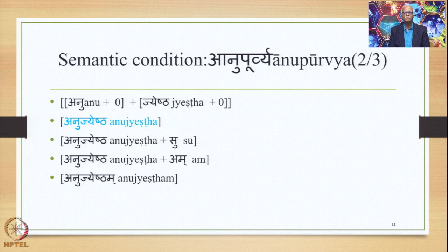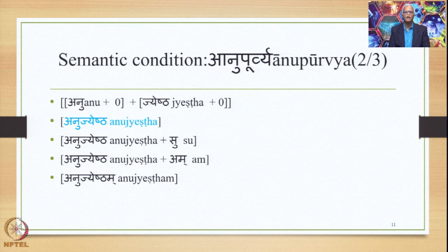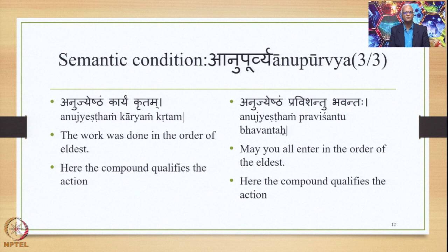After it gets the Pratipadika Saudhnya, the Sutra Supodhatuk Pratipadika Yoho applies and deletes both the Supas, namely Ta and Ngas. So we have Anu plus 0 plus Jyeshtha plus 0. Then, joining them together, we get the form Anujyeshtha. When we use the word Anujyeshtha in the sentence, we add the suffix Su after it. Since the Avyaibhava Samasa Anujyeshtha ends in A, the Sutra Navyaibhavad Atomthvapanchamyaha applies and substitutes Su by Am. So we have Anujyeshtha plus Am, and applying Sandhi rules we get the Subanta form Anujyeshtha.